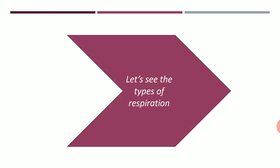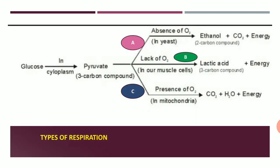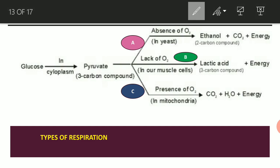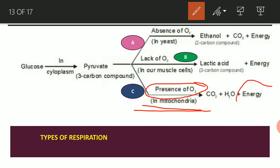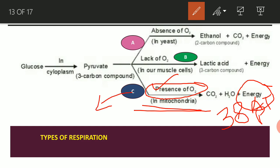There are several types of respiration depending on the organism and the atmosphere. The glucose molecule is first converted into pyruvate in the cytoplasm. This pyruvate is then converted into energy in three ways. The first way is in the presence of oxygen, occurring inside the mitochondria, producing the largest amount of energy — 38 ATP. This type, where oxygen is present, is known as aerobic respiration.